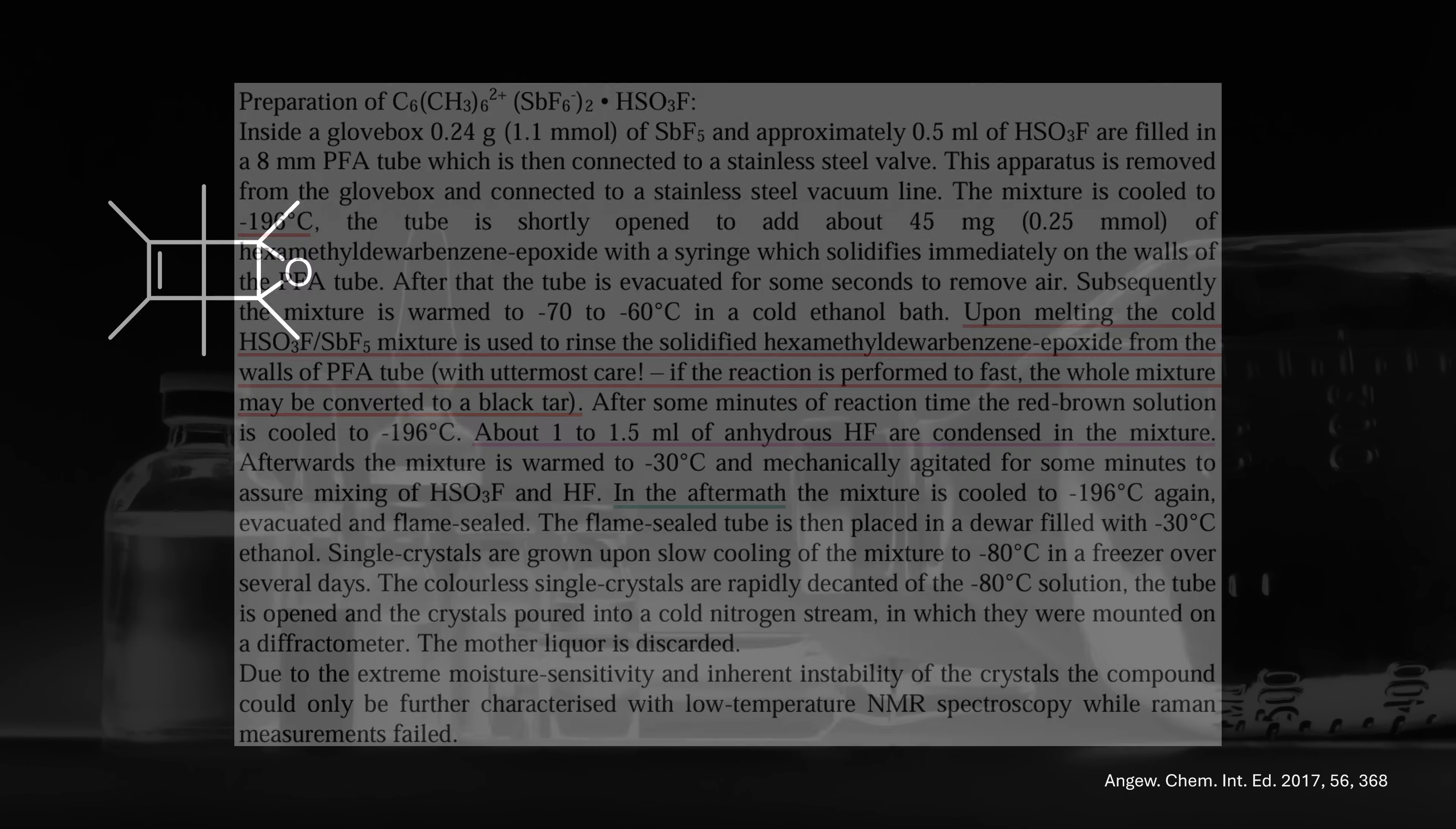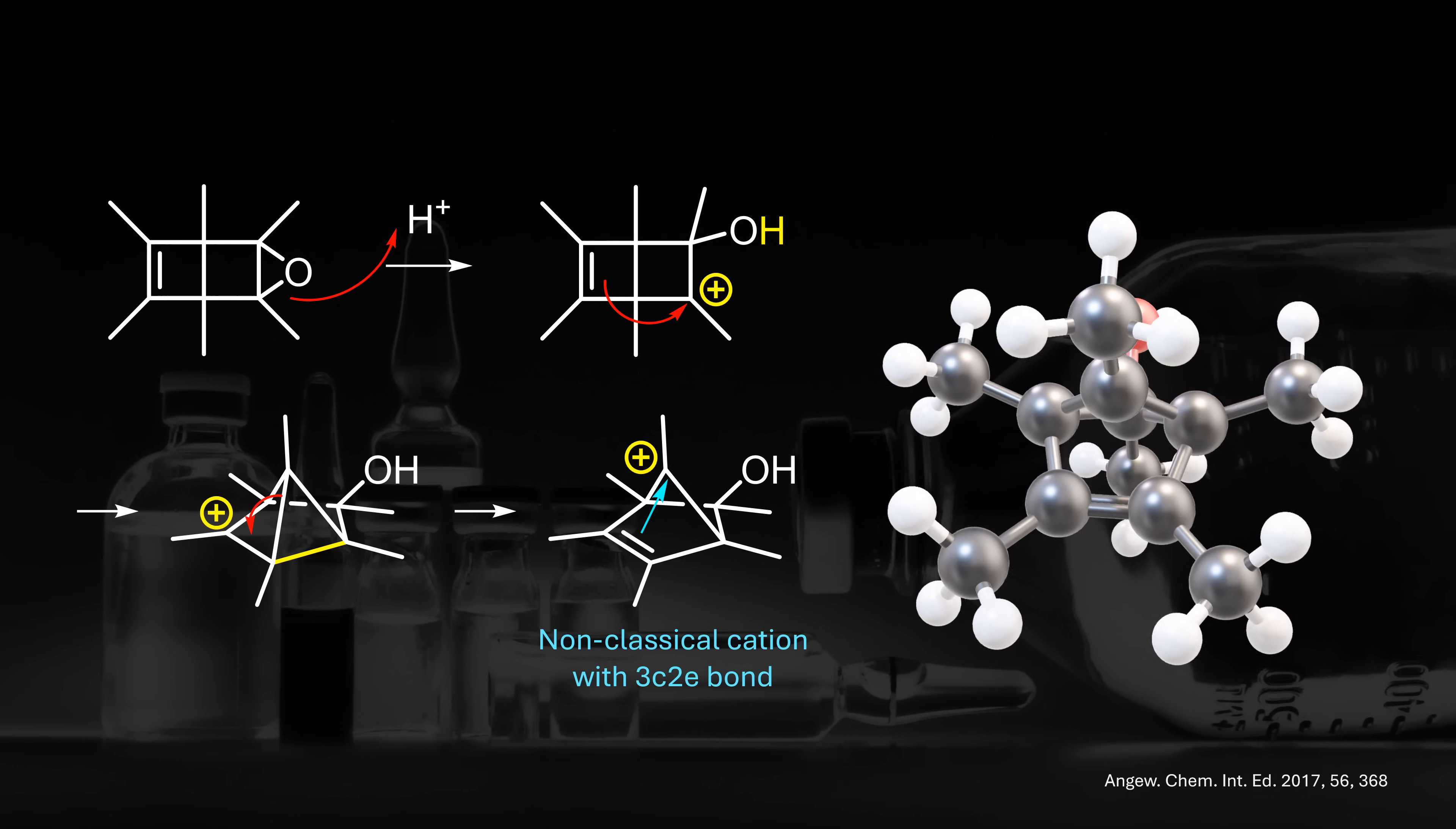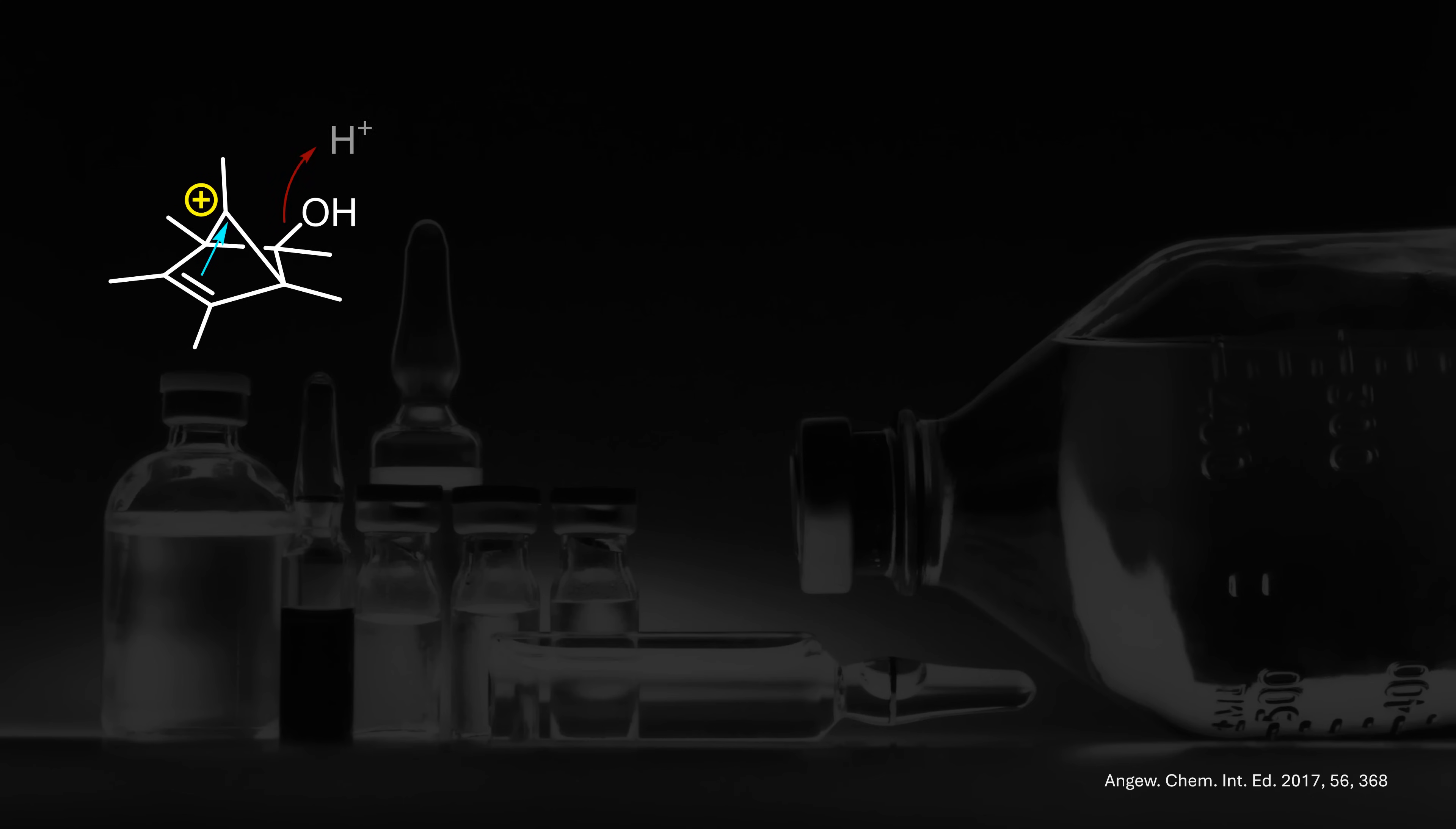But how does this work mechanistically? It's just guessing, but likely the protonation of the epoxide triggers a rearrangement from the Dewar benzene framework into a bridged 5-membered ring. The positive charge ends up at the top of the pyramid, stabilized by a 3-center 2-electron bond, reminiscent of the 2-norbornyl example we've covered.